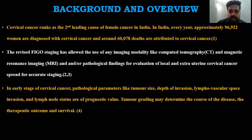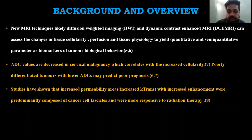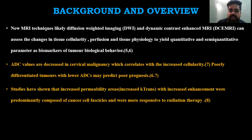Tumor grading will determine the course of disease, therapeutic outcome, and survival. New MRI techniques like diffusion-weighted imaging and dynamic contrast MRI can assist in assessing changes in tissue cellularity, perfusion, and tissue physiology, and can act as parameters and biomarkers of tumor biological behavior. ADC values have been seen to be decreased in cervical malignancy, which correlates with increased cellularity. Thus, poorly differentiated tumors have lower ADC values and help predict worse prognosis.